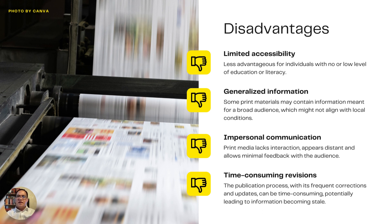Now let's look into the disadvantages of using publications. In terms of accessibility, print materials may not be suitable for those with limited education or low levels of literacy. Some print materials also offer content intended for a wide audience, which may not align with local conditions, reducing their effectiveness in specific contexts. Print media also lacks interactivity — they offer minimal audience feedback and interaction. Publications need frequent updates, and their production process can be time-consuming, meaning information may become outdated before it even reaches print.